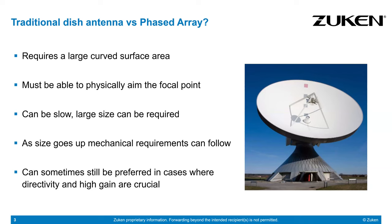A traditional dish requires a large curved surface area, and the farther you want to reach out with it, the bigger that structure has to be. You have to physically be able to aim that focal point, and this can lead to a slow response time or a large size of the dish. The mechanical requirements can get quite hefty as you start pushing up those structures. However, this type of antenna can still be preferred in cases where directivity and high gain are crucial.